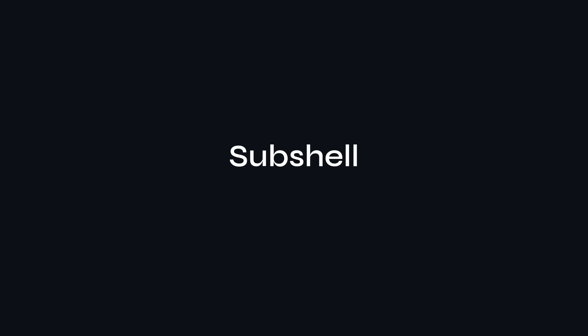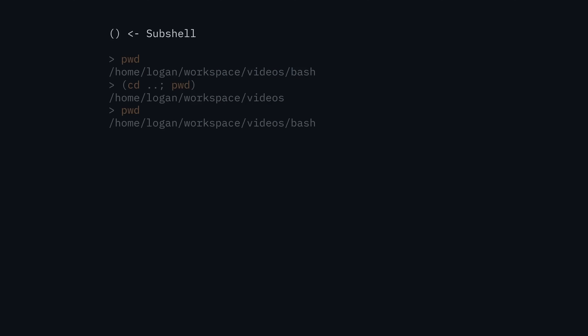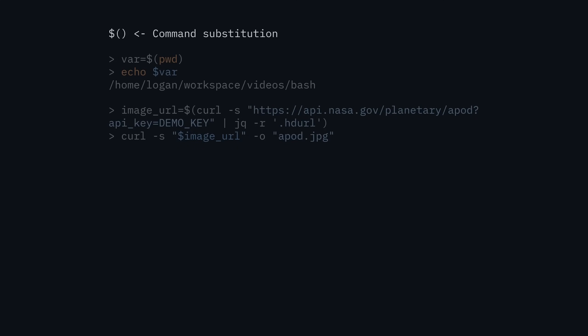The subshell is something you'll end up using a lot. You have a set of parentheses and within them some operation. For example, running pwd shows the current bash directory, but running a command in a subshell where you cd to the parent and then run pwd shows the videos directory. Then back in the original shell, pwd is still the bash directory — because the cd and any operations within that subshell only existed in that context. Most commonly you'll use it for command substitution: dollar sign and then parentheses. You can run a command and use the output anywhere you'd use a value, like in a variable assignment.